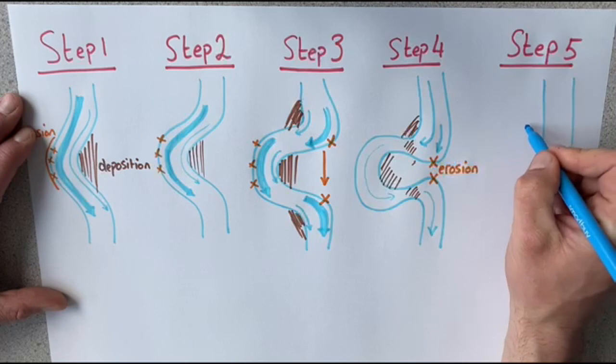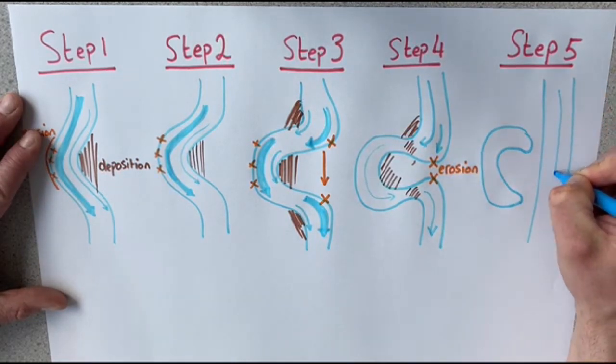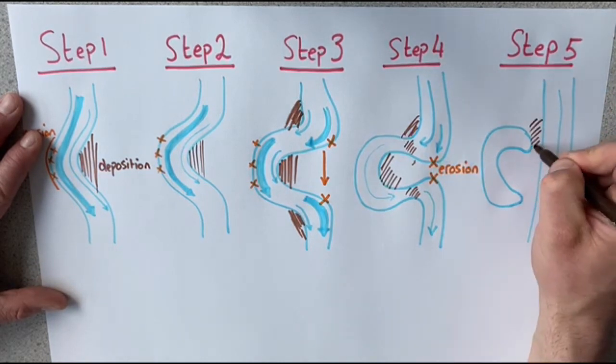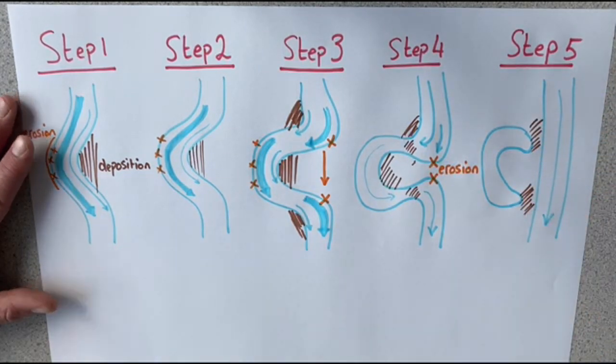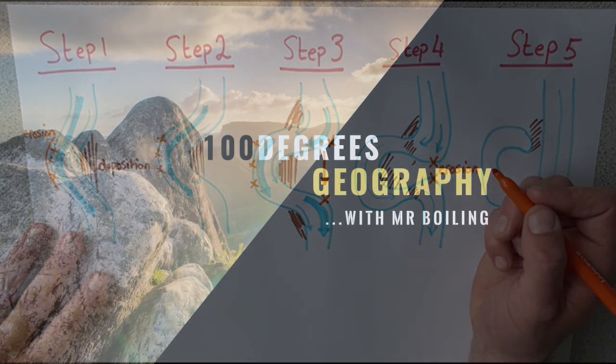Step 5. We can now see that the river has completely broken through the neck of the meander, creating an oxbow lake as the river continues to flow now in a straighter channel along its course.